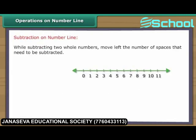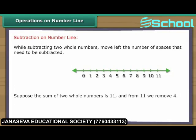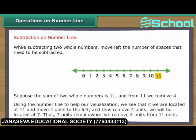While subtracting two whole numbers, move left the number of spaces that need to be subtracted. Suppose the sum of two whole numbers is eleven, and from eleven we remove four. Using the number line, if we are located at eleven and move four units to the left, we will be located at seven. Thus, seven units remain when we remove four units from eleven.